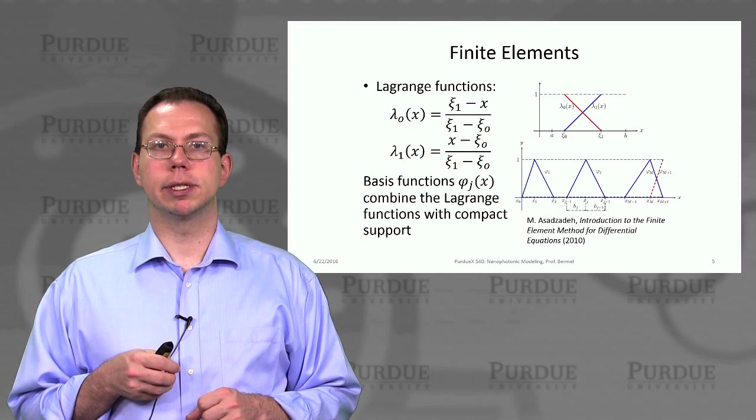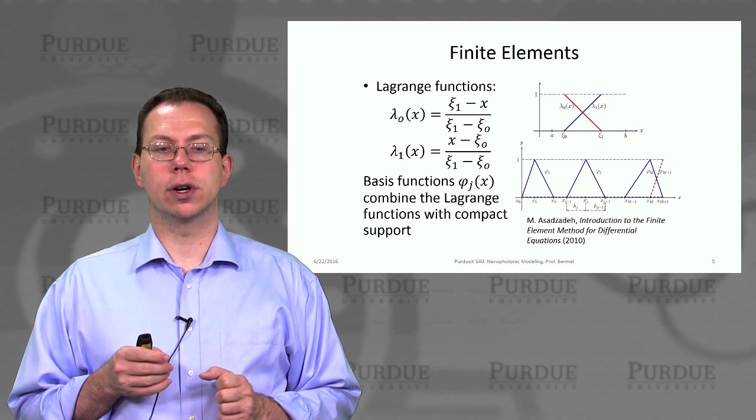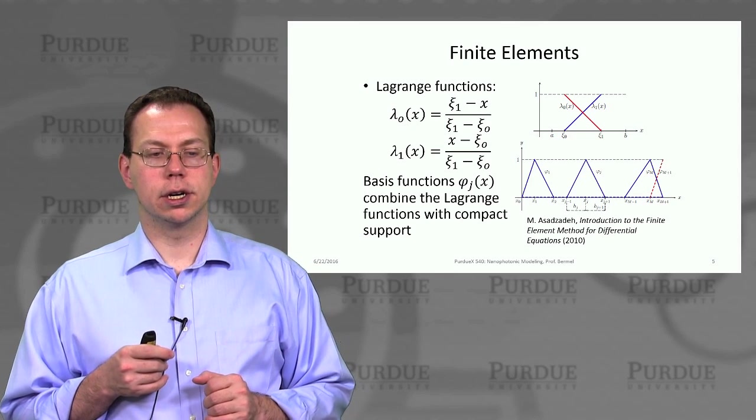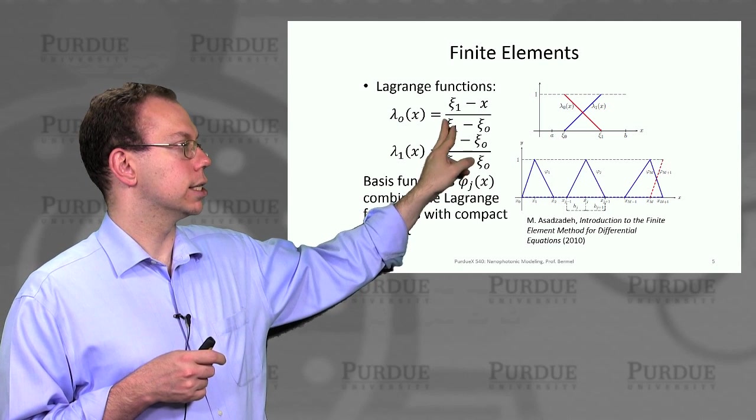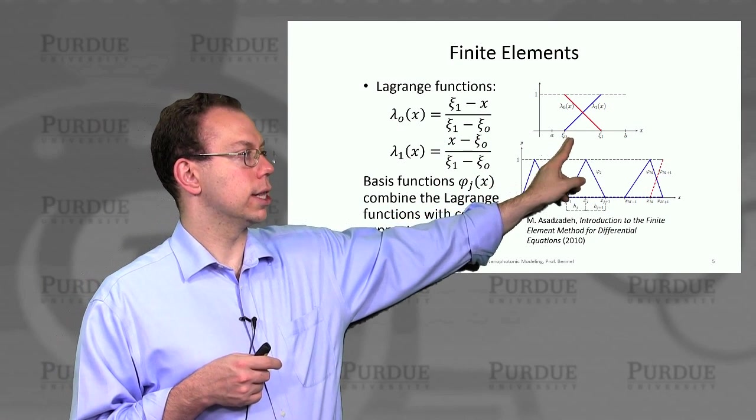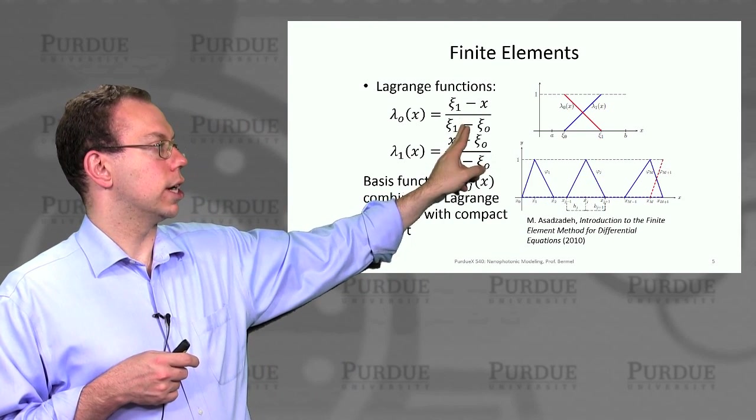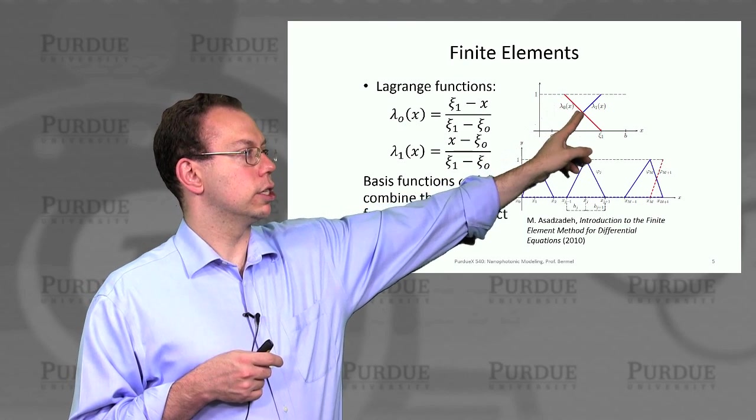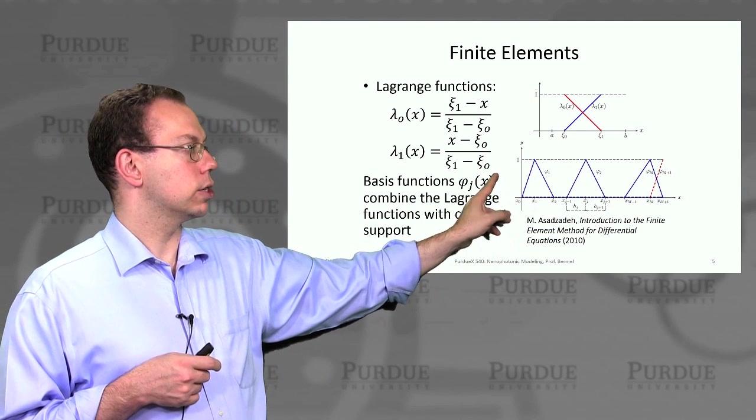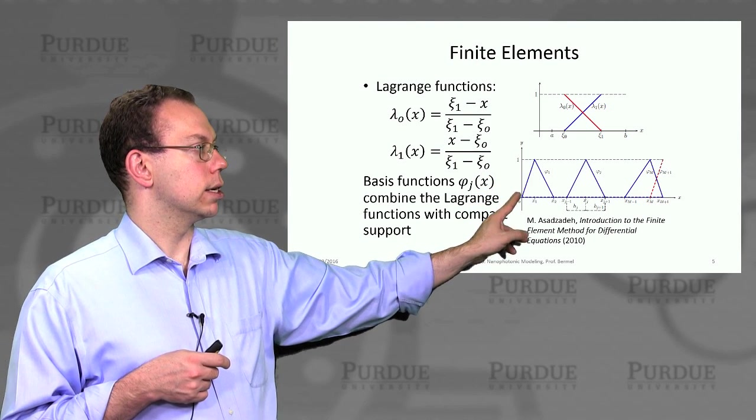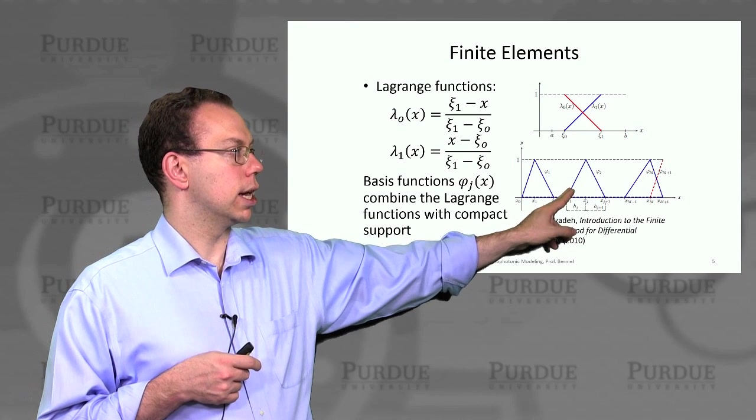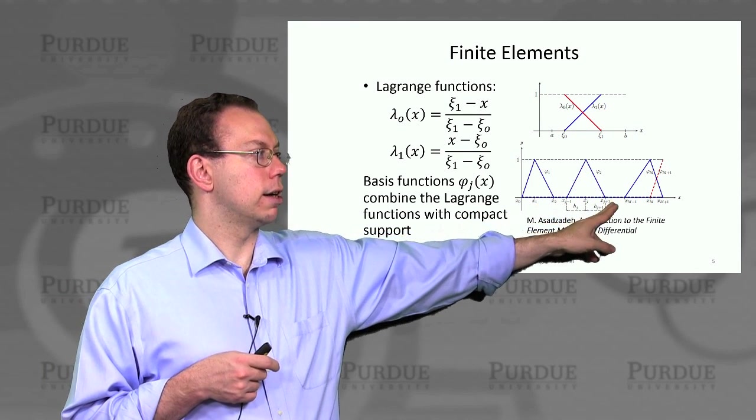And so then often times we find that it's computationally convenient to define the so-called Lagrange functions to represent our overall function in the linear case that I was talking about earlier. And so basically the Lagrange functions are defined like this. So if you have an interval in 1D that goes from xe 0 to xe 1, then we would have a Lagrange function lambda naught that basically is our original function times this line that's going downwards, and then we have this lambda 1 going up. And so then we can actually write down these phi 1s as basically a sum of lambda 1 for this first element plus lambda naught for the second element, and then we can have lambda 1 for this second element plus lambda naught for the third element and so on.